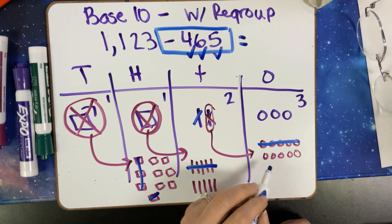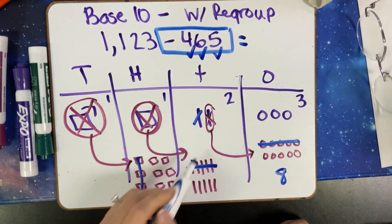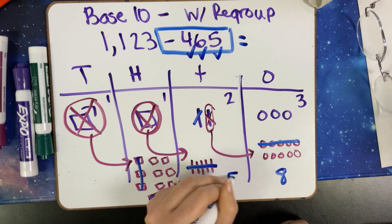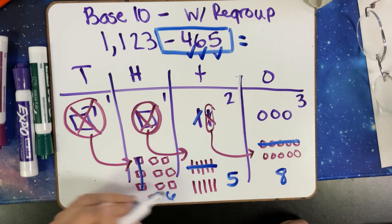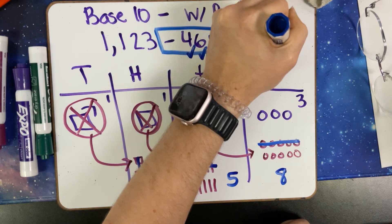Now we can count for our answer: five, six, seven, eight in our ones place. We have five in our tens place and we have six in our hundreds place. So our answer is going to be 658.